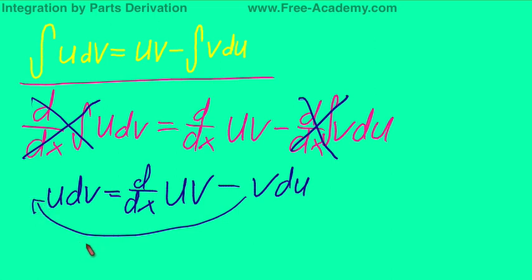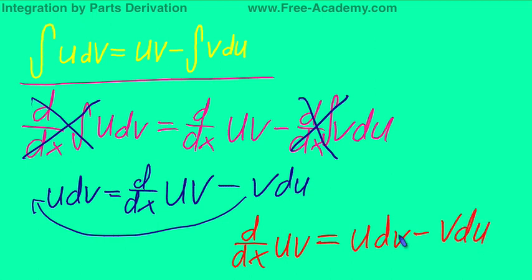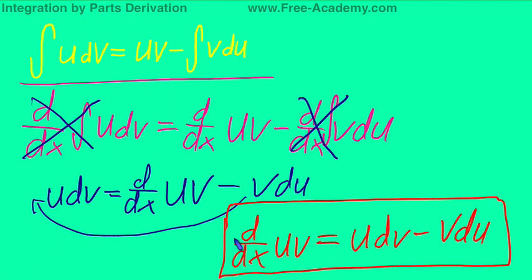We'll move Vdu to the other side and reorganize things. Grab a different color here. And we get that the derivative of U and V equals Udv plus Vdu. And this is our product rule of derivatives.